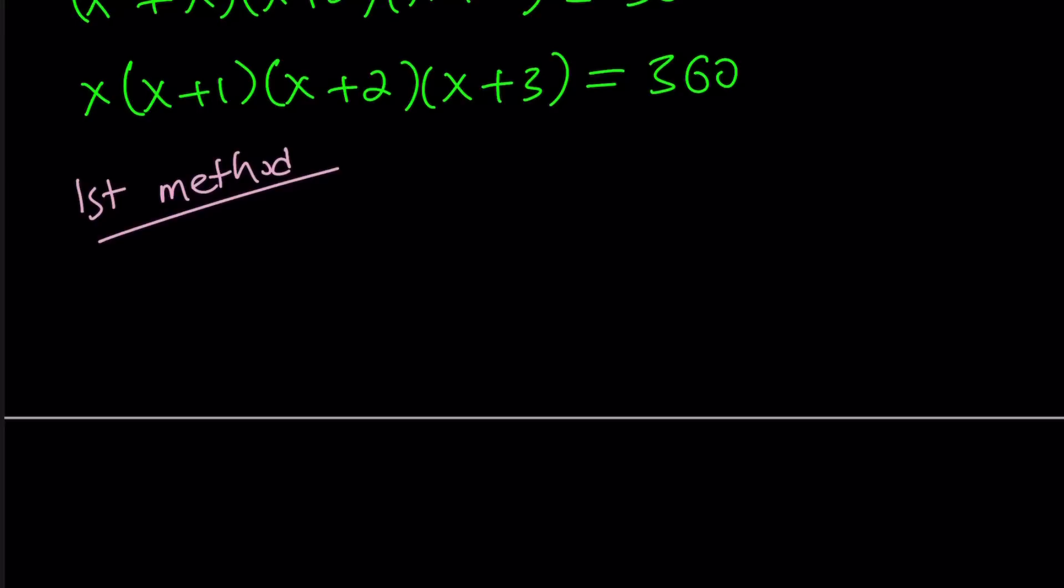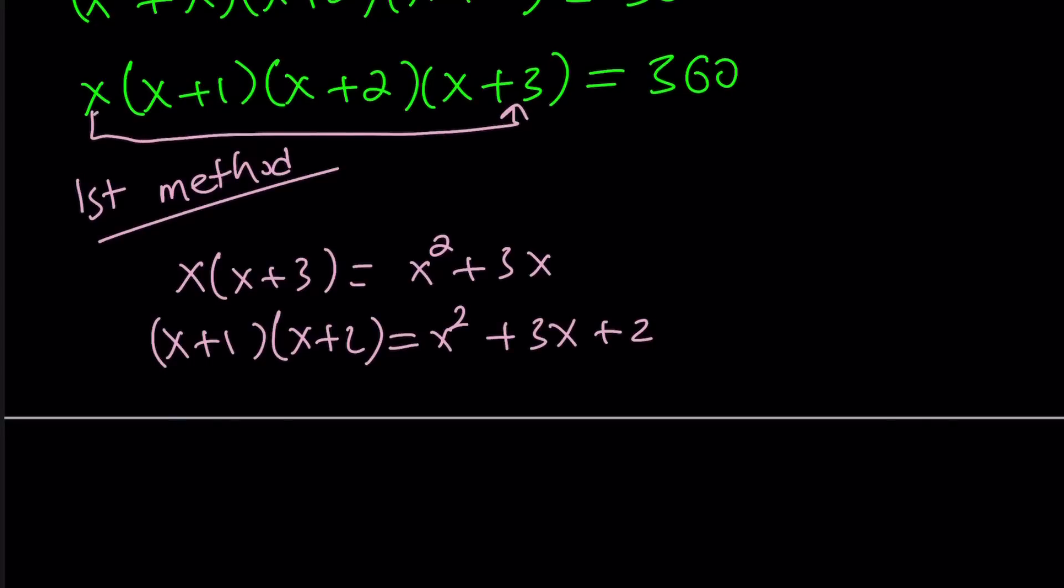One thing that I want you to note after cross-multiplying and factoring out the x, we get something nice. So this is a special type of equation. Notice that x times x plus 3 is x squared plus 3x, and x plus 1 times x plus 2 is x squared plus 3x plus 2. I multiplied these two and these two.